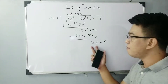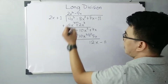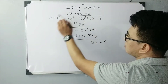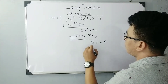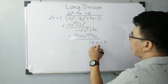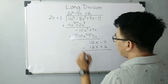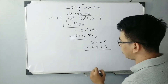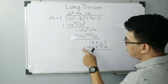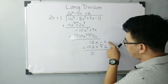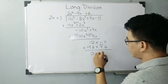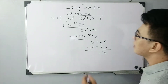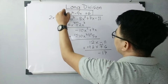Same process. The first term, 12x, divided by 2x gives us 6. So plus 6 in the quotient. Now multiply 6 by the divisor polynomial, which gives 12x plus 6. We subtract it, so the signs change to negative. So 12x plus negative 12x is 0, and negative 11 plus negative 6 gives us negative 17. Since there's nothing more to bring down, this is the remainder.